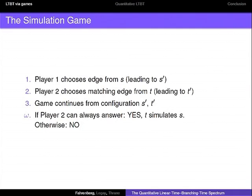Let me sum up this simulation game. Player one chooses an edge from the state, then player two chooses a matching edge, and the game continues from this new configuration. If player two can always answer the move of player one, then there is a simulation relation. If player two at some point cannot answer, then there is no simulation relation.